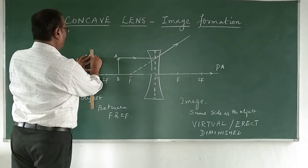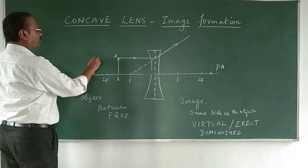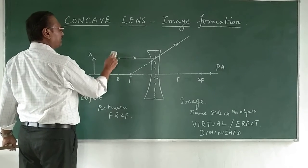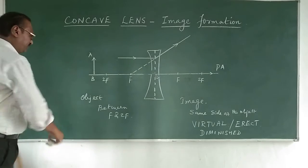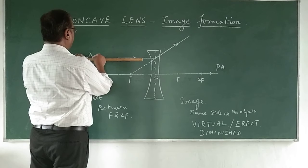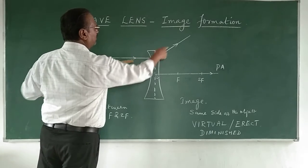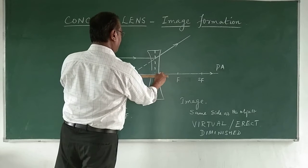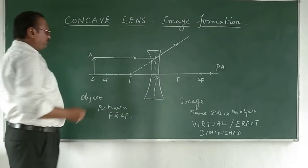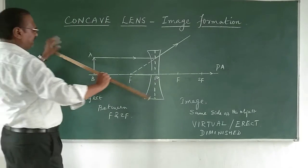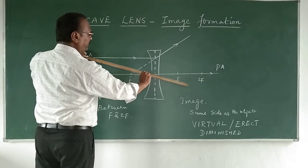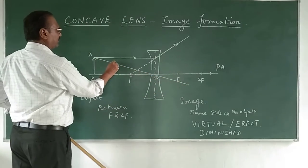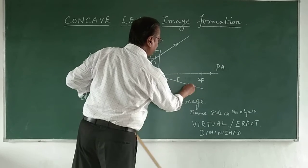I am going to take the object now beyond 2F. The object is beyond 2F — this has become A and B. I am removing the object from within F and 2F. The ray parallel to the principal axis passes through the focus and appears to start from there. Now I take another ray passing through the optical center. Pass it through the optical center — the ray goes like this, and you can extend it further for symmetry.